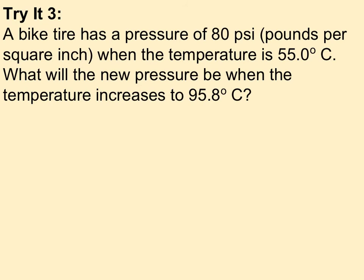Here's one final example for you to try. A bike tire is a pressure of 80 PSI. PSI is commonly used on things that we inflate, basketballs, our bike tires, etc. It just means pounds per square inch. So when the temperature is 55 degrees, 80 PSI, what will the new pressure be if the temperature increases to 95.8? So go ahead and try this on your own.